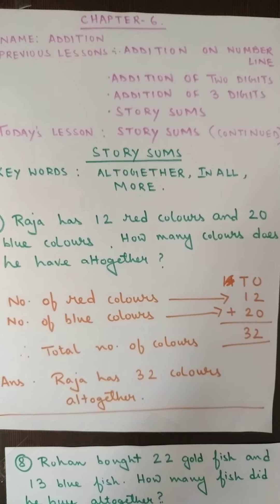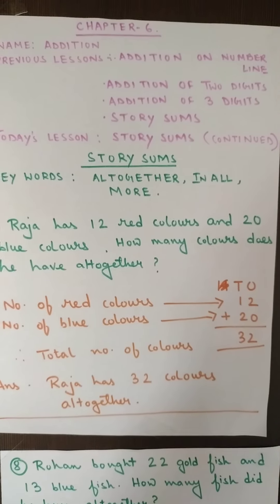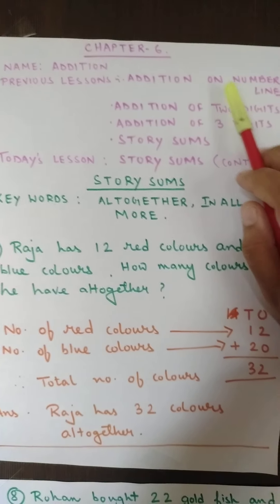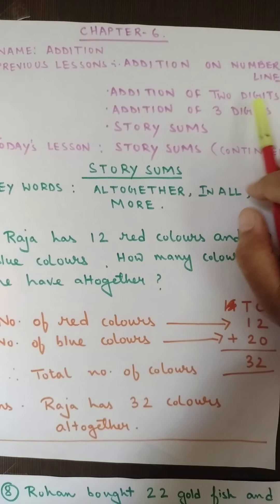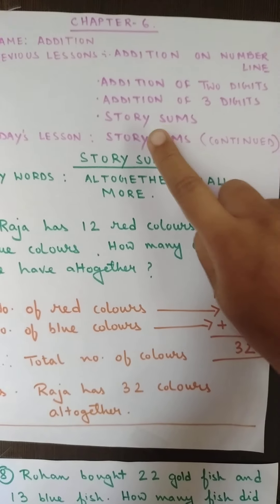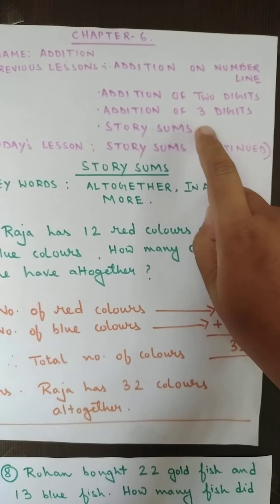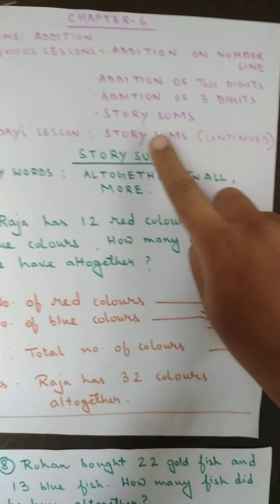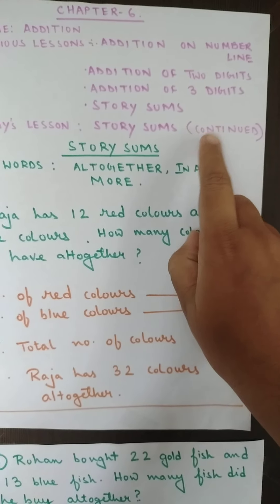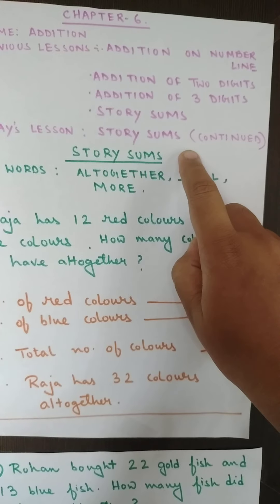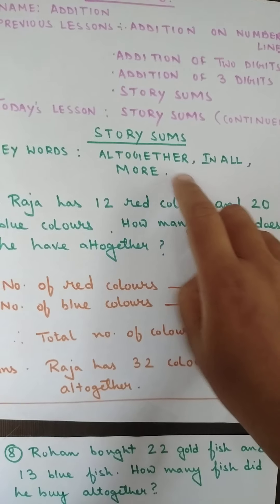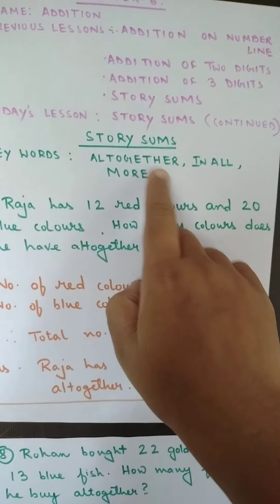Namaste students, with Amma's Grace. I think we are in good health. We were doing chapter number six and in this chapter we have already done addition on number line, addition of two-digit numbers, addition of three-digit numbers, and last day we started with story sums on addition. So today we will be continuing with the same thing — solving a few more story sums on addition. As I told you, there are a few key words.